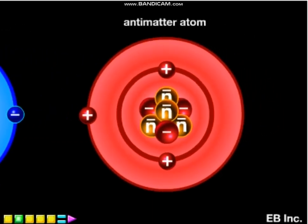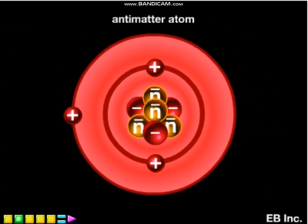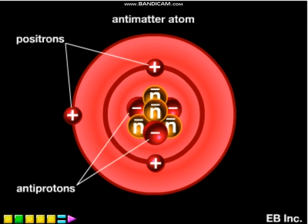The component particles of antimatter are called positrons, antiprotons, and antineutrons. Although antineutrons are neutral, they have a magnetic moment opposite in sign to that of the neutron.